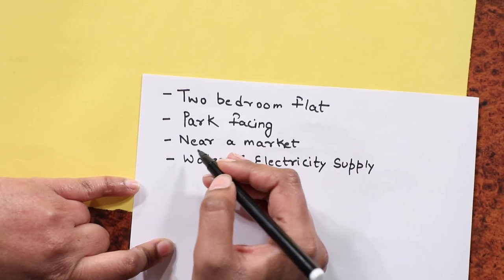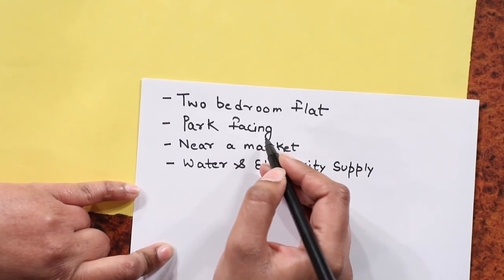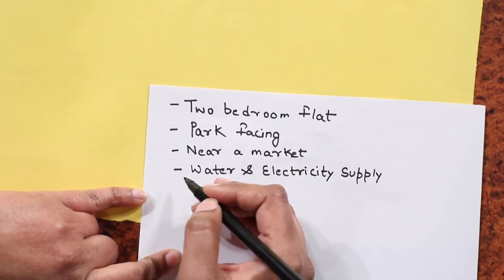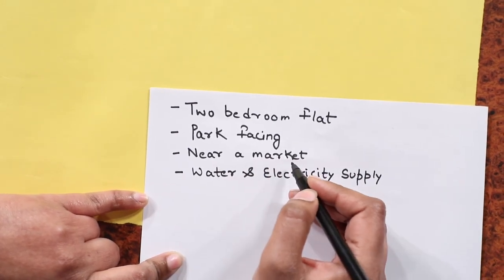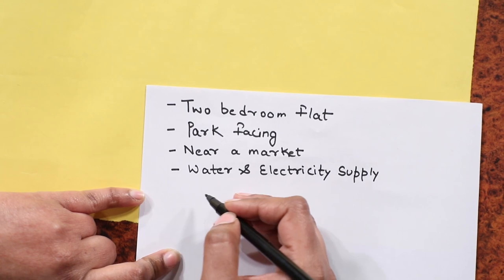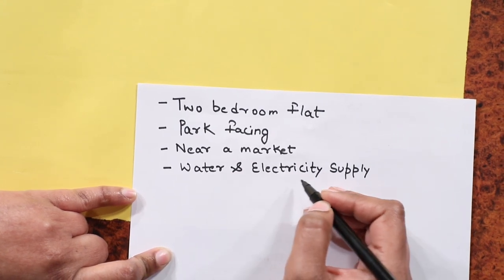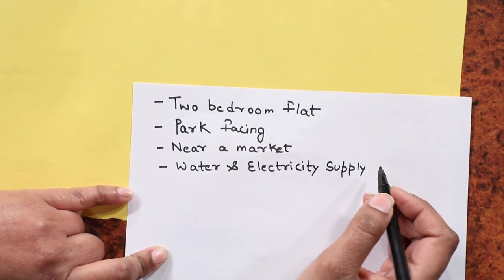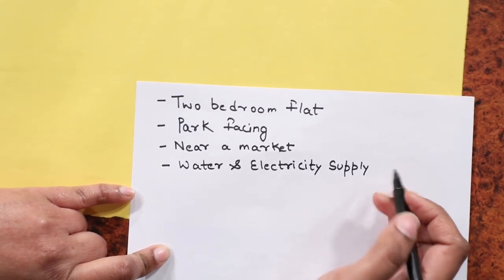I have said that I want a two-bedroom set flat, it should be park facing, it should be near the market, and it should have uninterrupted water and electricity supply. Then where to contact? And then I have given my contact details. Fine, very good.